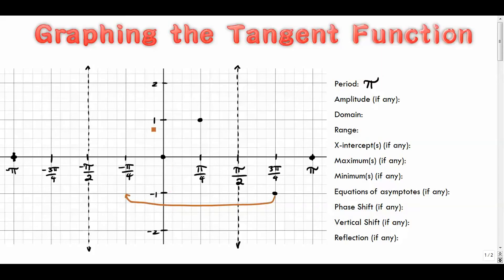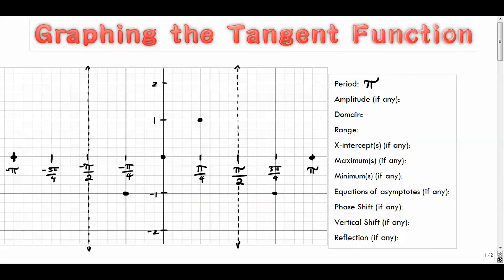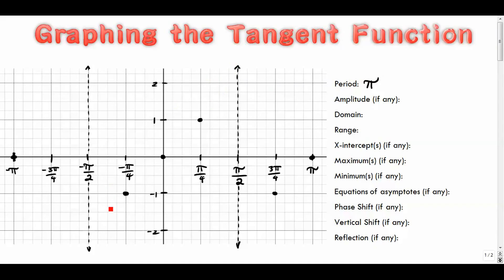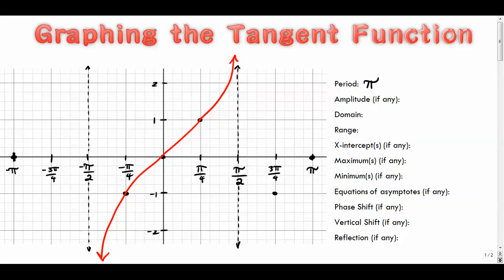Because tangent is an odd function and the points repeat every π units, the tangent of −π/4 is negative one as well, reflecting the symmetry across the origin. So the graph is going to infinitely approach the left asymptote and infinitely approach the right asymptote but never touch them. Smoothing it out in between gives us the tangent function, and it would keep repeating itself forever and ever.